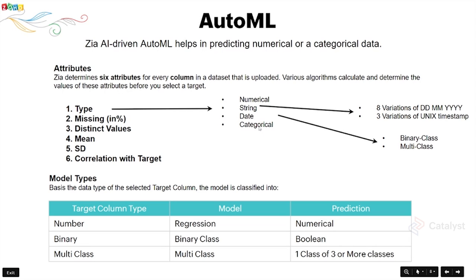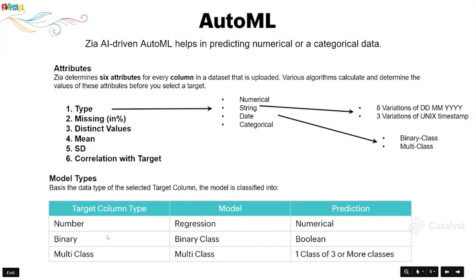Zia also calculates missing count and percentage, distinct values, mean, standard deviation, and correlation with the target for each column. Based on the data type you select for the target column — number, binary, or multi-class — the model type varies accordingly. For a number target column, the model uses regression and the prediction output is numerical. For a binary target column, it uses a binary class model and the prediction is a boolean (true or false). For multi-class, the model is also multi-class and the prediction is one class out of three or more possible classes.